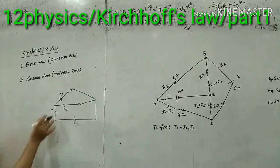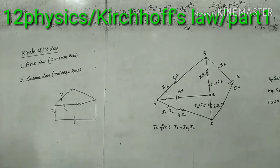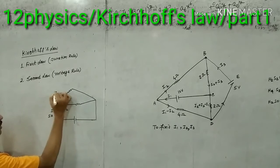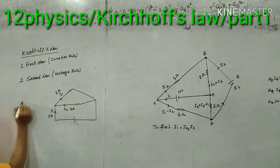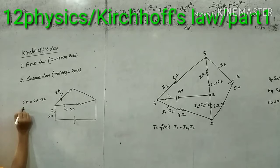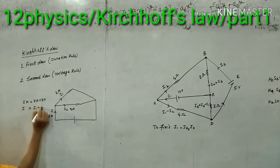That means, which is the charge particle. So we have 5 Ampere, we have 2 Ampere, we have 3 Ampere. That means we have 5 Ampere equals 2 Ampere plus 3 Ampere. So we have I equals I1 plus I2.